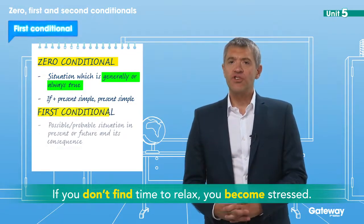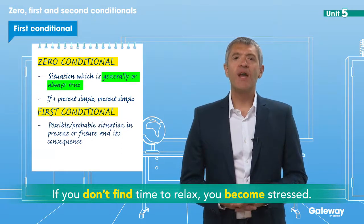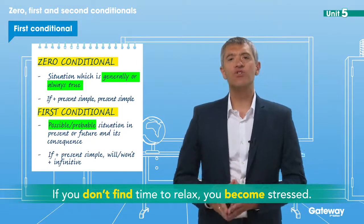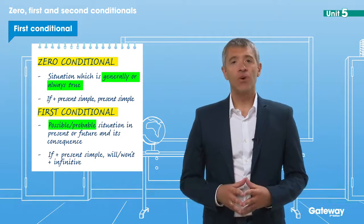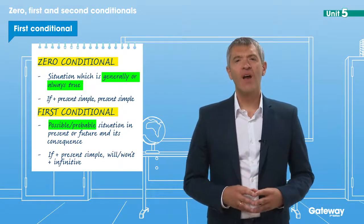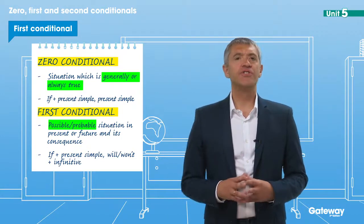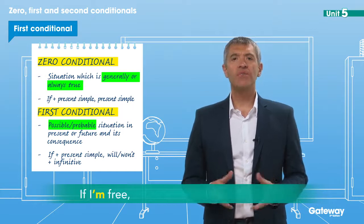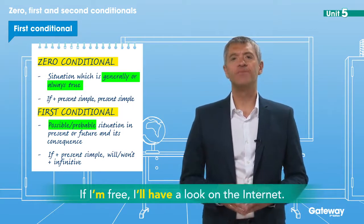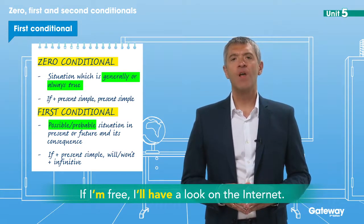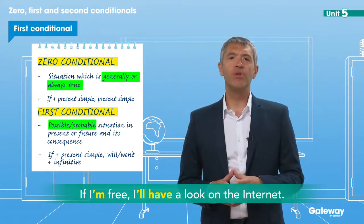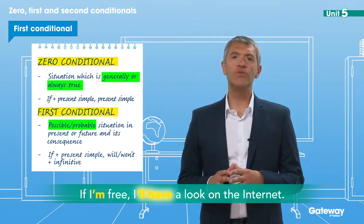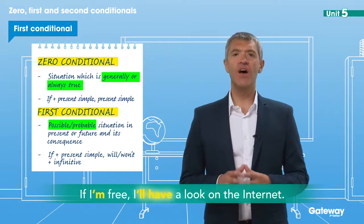The first conditional describes a possible and probable situation in the present or future and its consequence. So, as I said before, I don't think I have much to do later on. So, if I'm free, I'll have a look on the internet. For the first conditional, we use the present simple in the half of the sentence with 'if', and 'will' or 'won't' plus the infinitive in the other half.